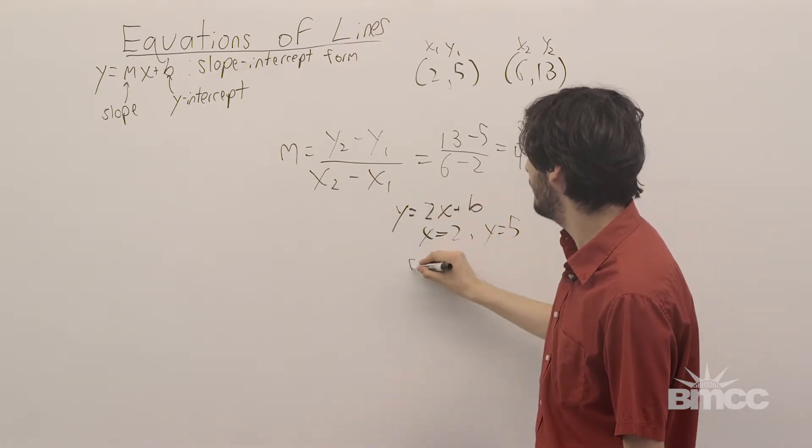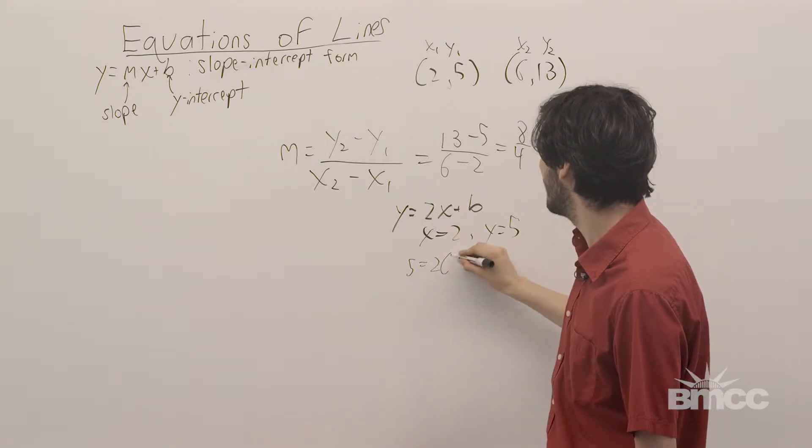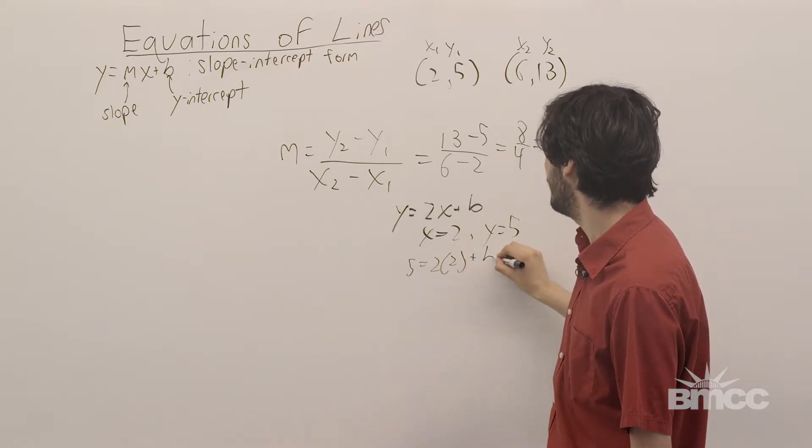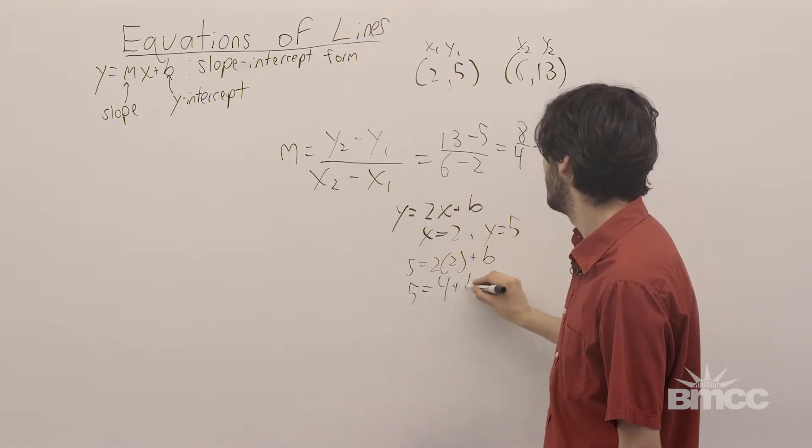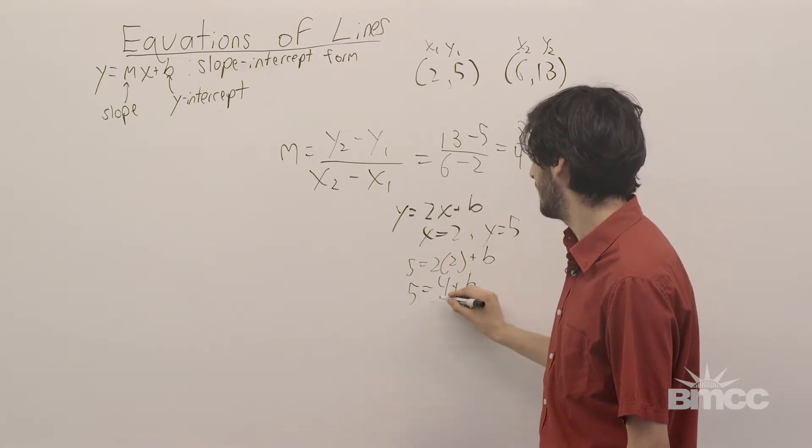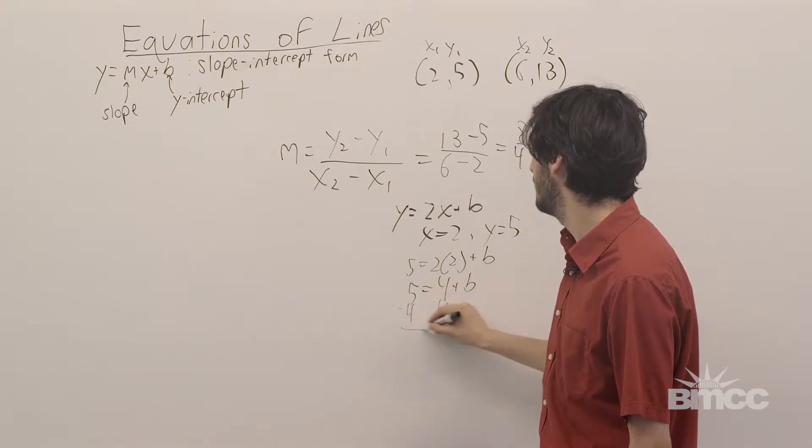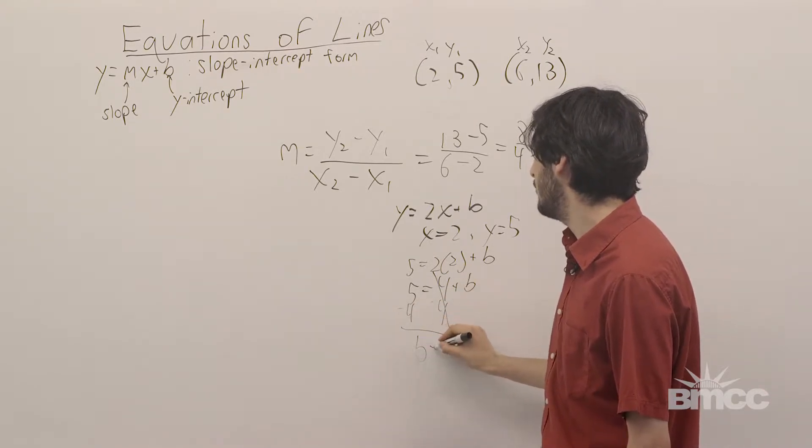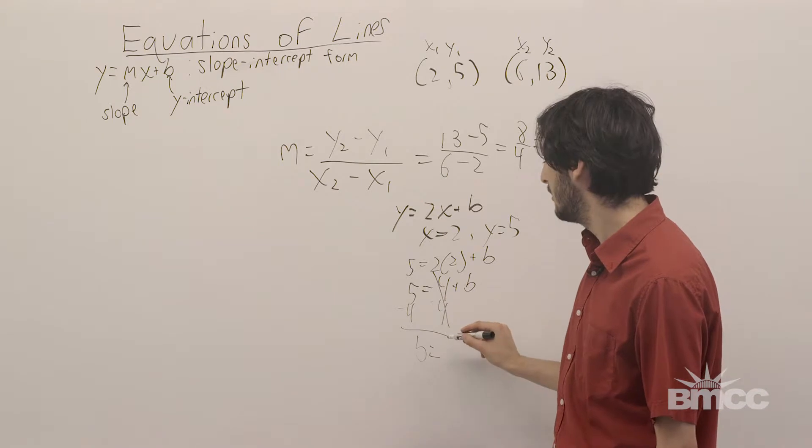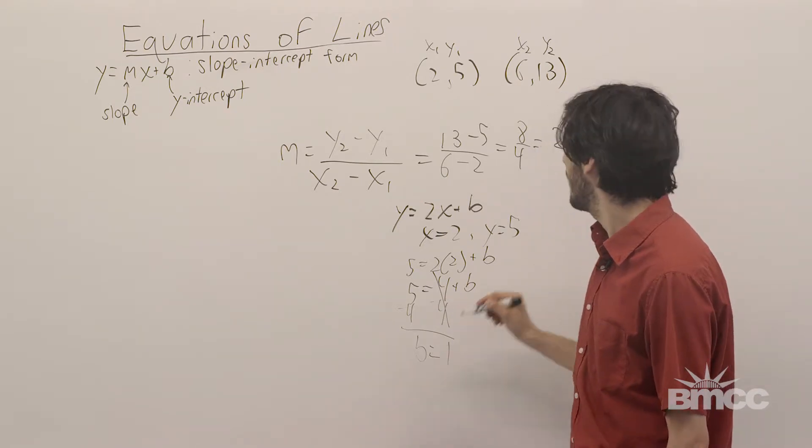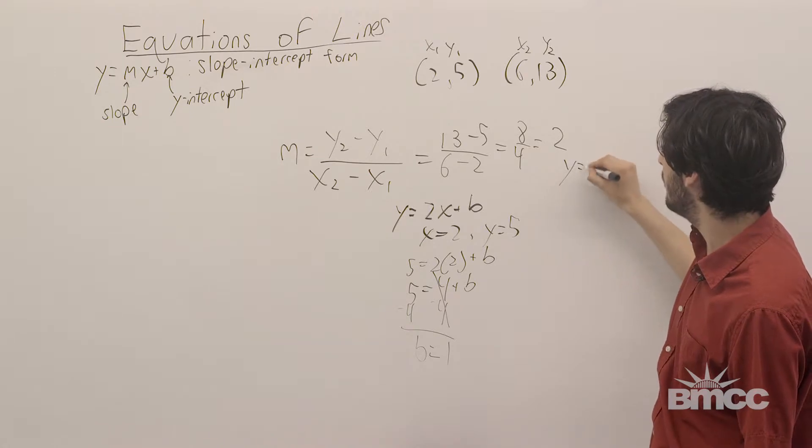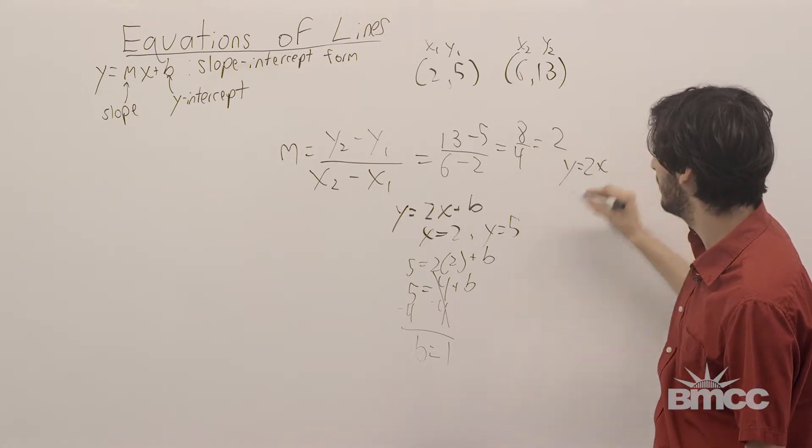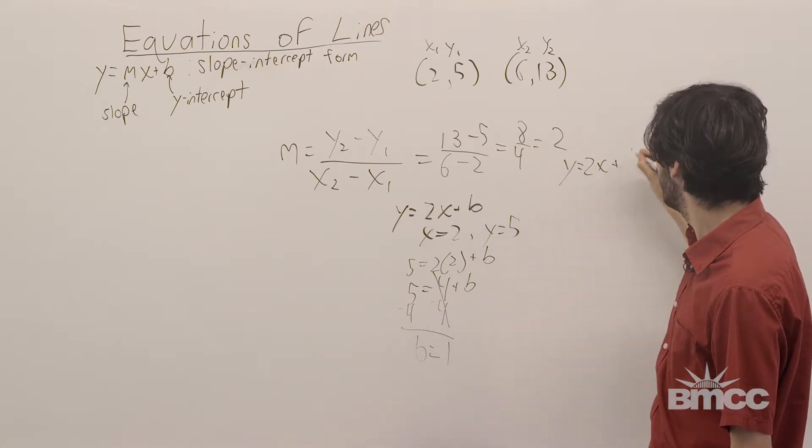So, we get 5 is equal to 2 times 2 plus b, or 5 is equal to 4 plus b, or subtracting 4 on both sides, we get b is equal to 5 minus 4, which is 1. Thus, our equation of the line is going to be y equals 2x plus 1.